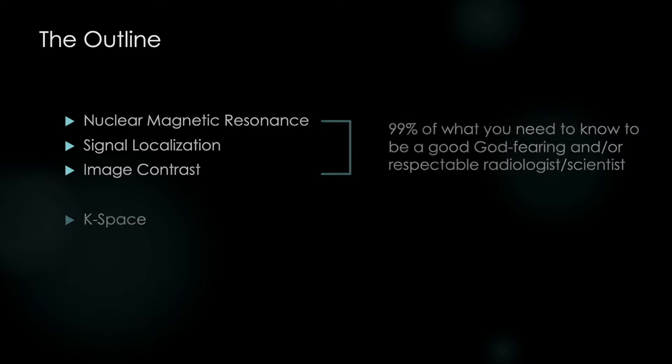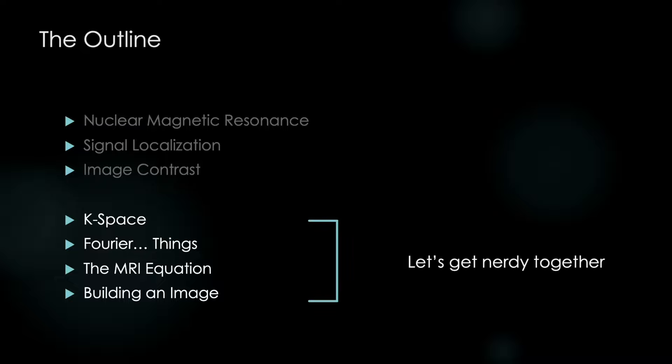But wait, there's more. We have this unique concept to MRI physics, the dreaded K-space. It's such a confusing topic because it just comes out of nowhere. People just start talking about K-space and they don't explain why it even exists. Why do we have K-space? The story is actually fascinating. And in order to explain it, we need to understand Fourier things, the MRI equation, and then how this relates to building an image. And these constitute the full complete story of MRI physics. And if you're interested in this, let's get nerdy together.